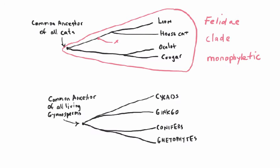Moving over to plants, all living gymnosperms share a common ancestor from the early Carboniferous. If we define the taxonomic grouping Gymnospermi to include all modern gymnosperms — conifers, cycads, ginkgos, gnetophytes — as well as all the extinct gymnosperms, including extinct cycads and conifers, and include all the descendants from this ancestral gymnosperm, that would be a monophyletic taxon, or clade.